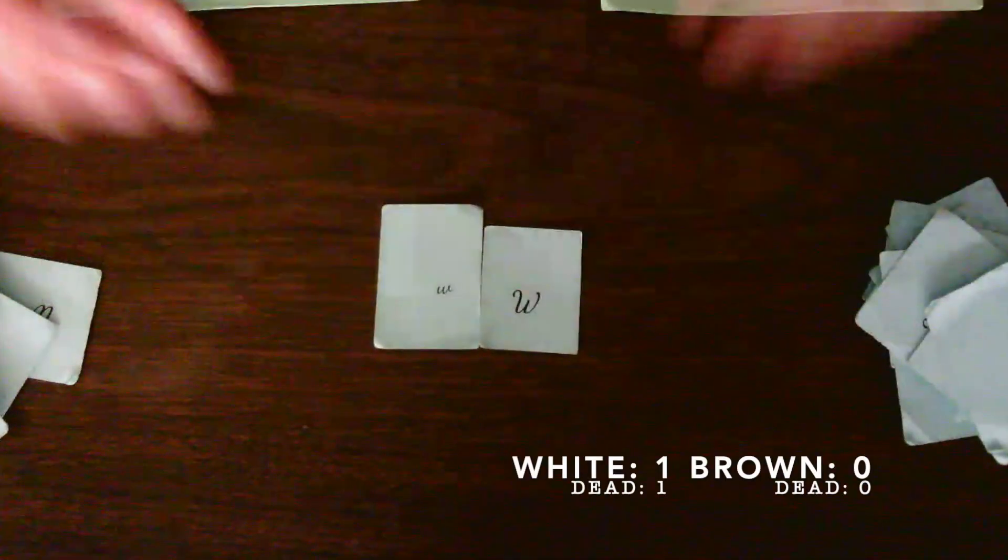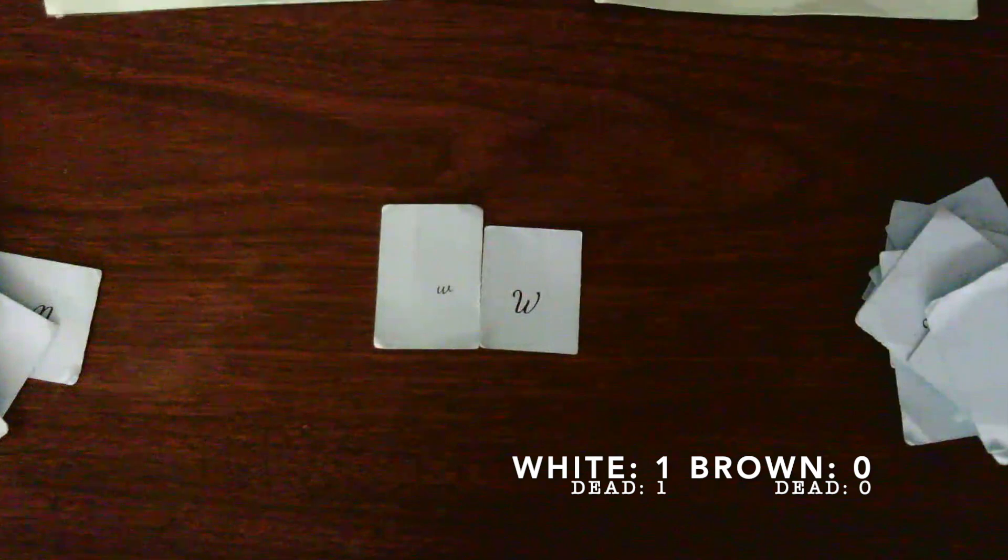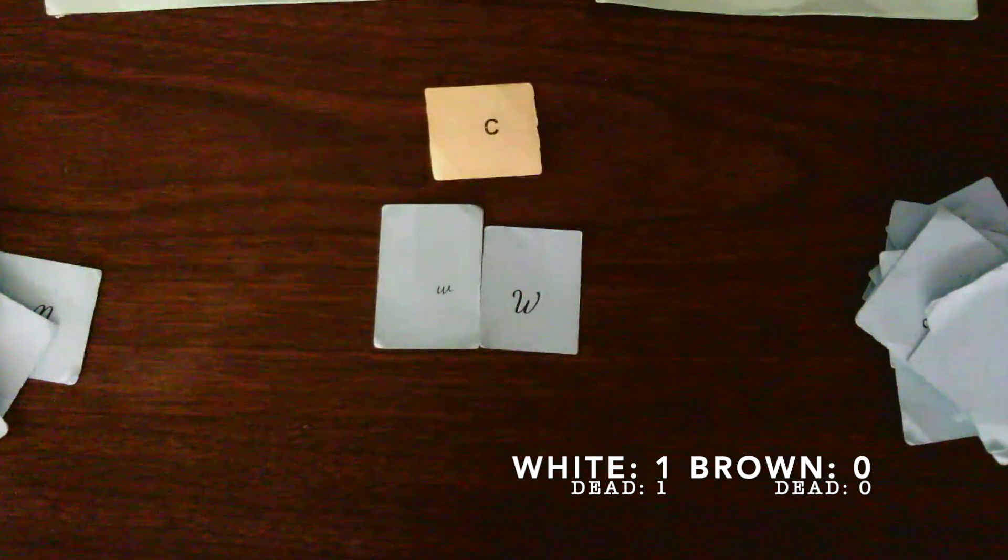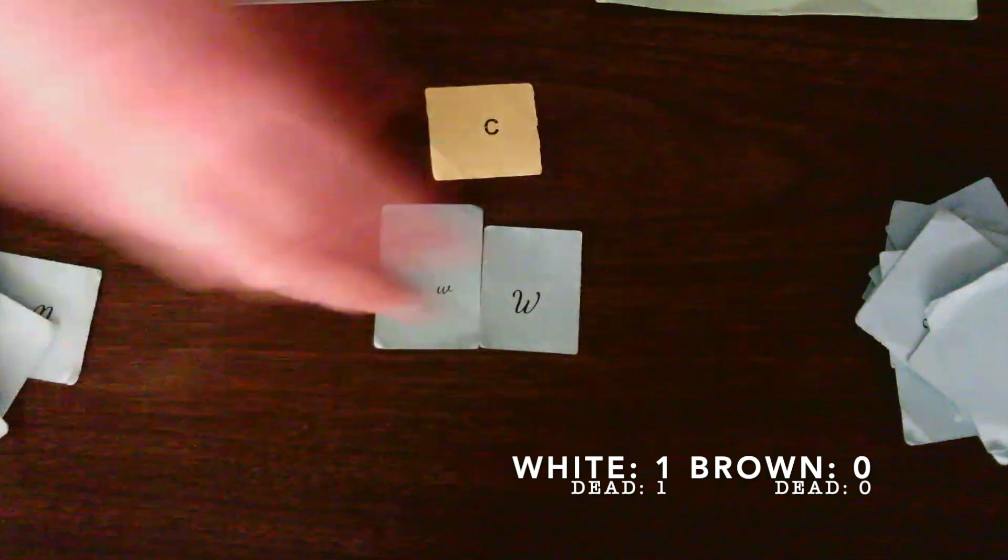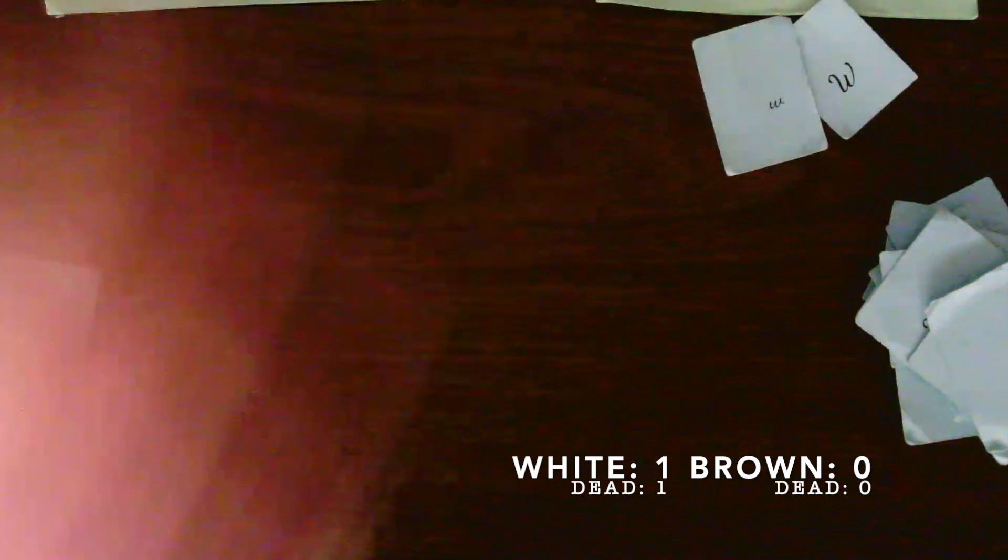I'm going to pull two alleles at random and I get a heterozygous white offspring. I pull a C, which means I have to ask myself, will this camouflage? Well, white will not camouflage in a forest region, so it will die. So I put it off into the dead graveyard pile.